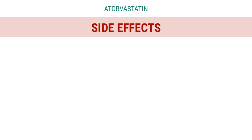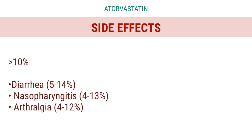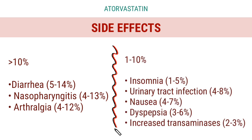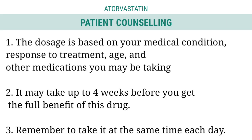Side effects greater than 10%: Diarrhea 5–14%, Nasopharyngitis 4–13%, Arthralgia 4–12%. 1–10%: Insomnia 1–5%, Urinary tract infection 4–8%, Nausea 4–7%, Dyspepsia 3–6%, Increased transaminases 2–3%, Muscle spasms 2–5%.